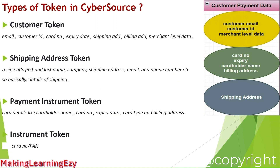Now let's see the types of tokens. We have different types of tokens based on what data a particular token contains. The first is the customer token, which contains the customer's email ID, customer ID, card details, shipping address, and billing address. The second is the shipping address token, which represents the shipping details. The third is the payment instrument token, which represents the card details and billing address — card holder name, card number, expiry date, card type, and billing address. The last is the instrument token, which represents only the card number, also known as the PAN (Permanent Account Number).